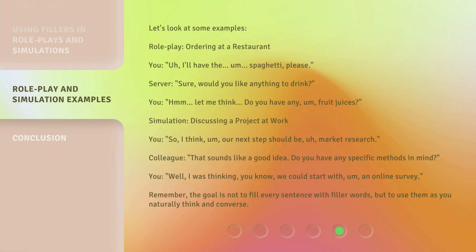Let's look at some examples. Role play: ordering at a restaurant. You: 'Uh, I'll have the, um, spaghetti, please.' Server: 'Sure, would you like anything to drink?' You: 'Hmm, let me think. Do you have any, um, fruit juices?'